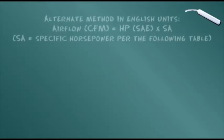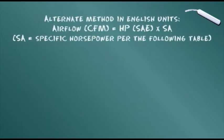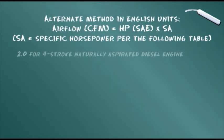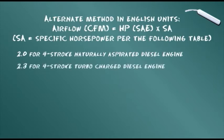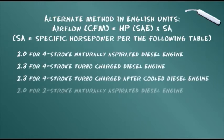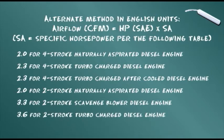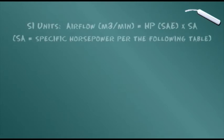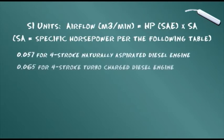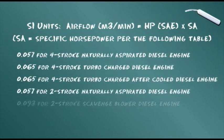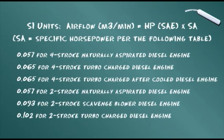This second formula is an alternate way of calculating airflow using engine horsepower. In this formula, SA represents the value for specific horsepower, which you should take from the table on the screen. Note that the English and metric figures for SA are completely different — a separate table of specific horsepower values is provided for use with international SI calculations.